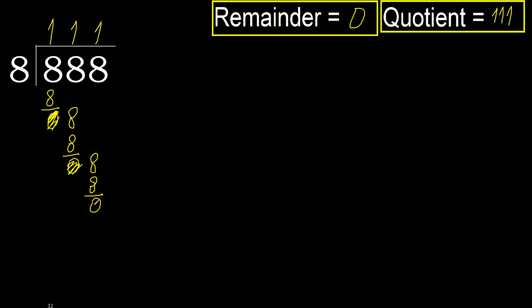Therefore 888 divided by 8 is here — 1, here — 1, here — 1. The answer is 111. Thank you.